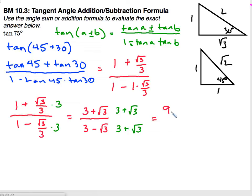So on the top I have 9 plus 3 square root of 3, 3 square root of 3. And then the square root of 3 times the square root of 3 is 3.